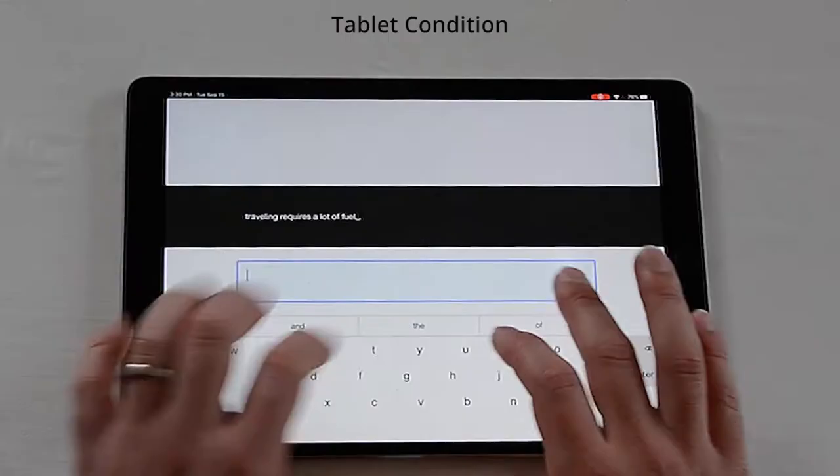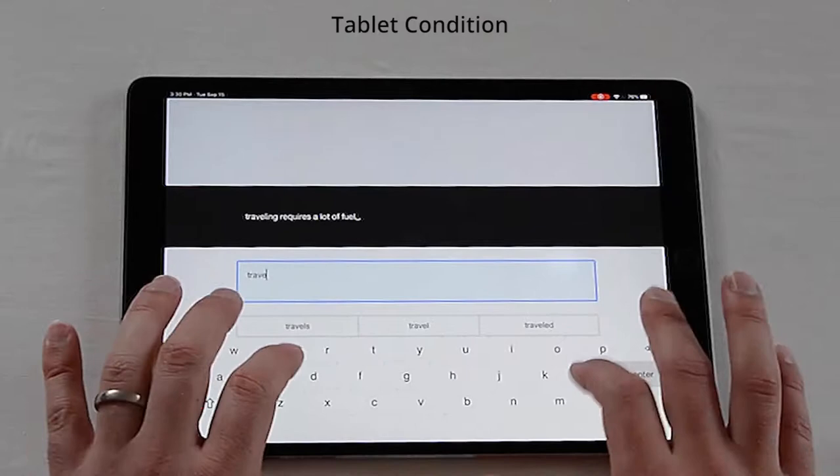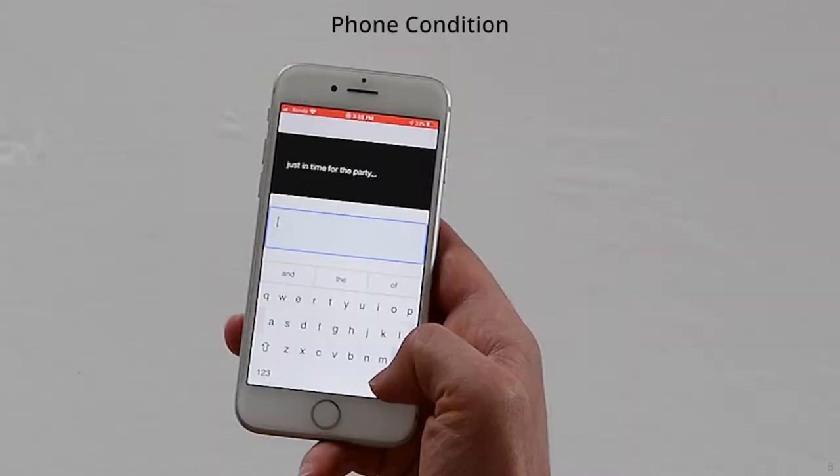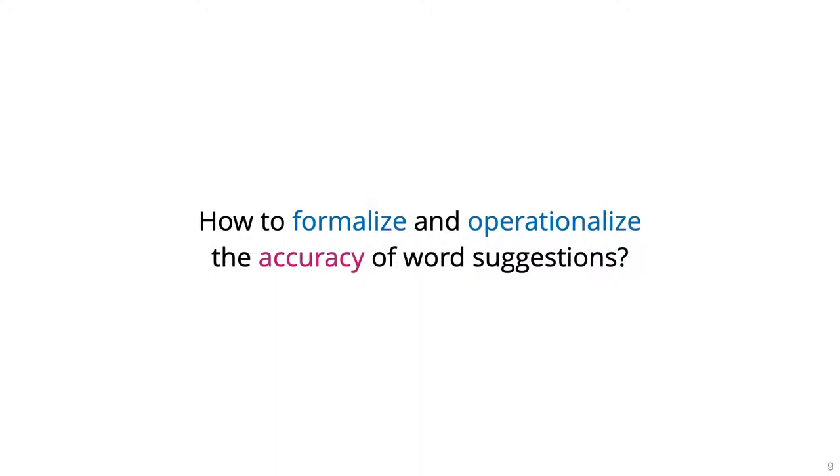The device used to type was used as a proxy for typing efficiency. Here is how the different condition looked like. Note that on phone, participants had to use only one hand.